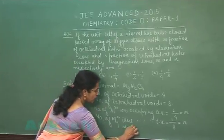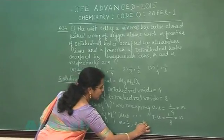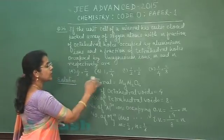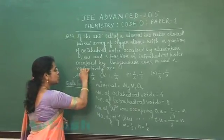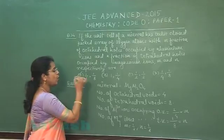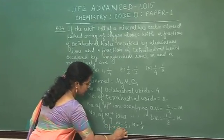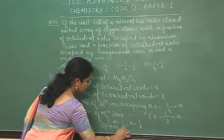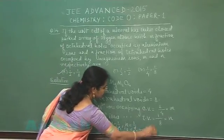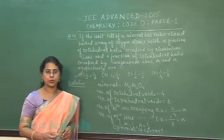The value of M is 1/2 and the value of N is 1/8. This means in the given options, the first option is correct — that is option A. So the answer is A, which is the correct option.